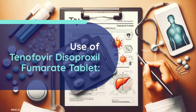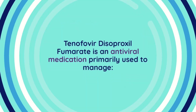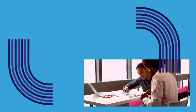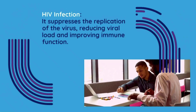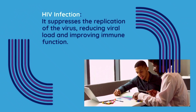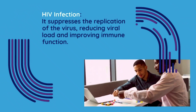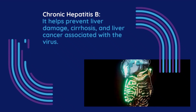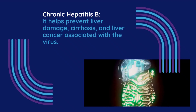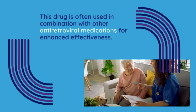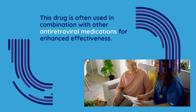Tenofovir disoproxyl fumarate is an antiviral medication with two primary uses. First, it is widely used to manage HIV infection. This drug helps suppress the replication of the virus, reducing viral load and improving immune function. Second, it is effective in treating chronic hepatitis B. By controlling the virus, it helps prevent complications like liver damage, cirrhosis, and liver cancer. It is usually combined with other antiretroviral medications for better results.